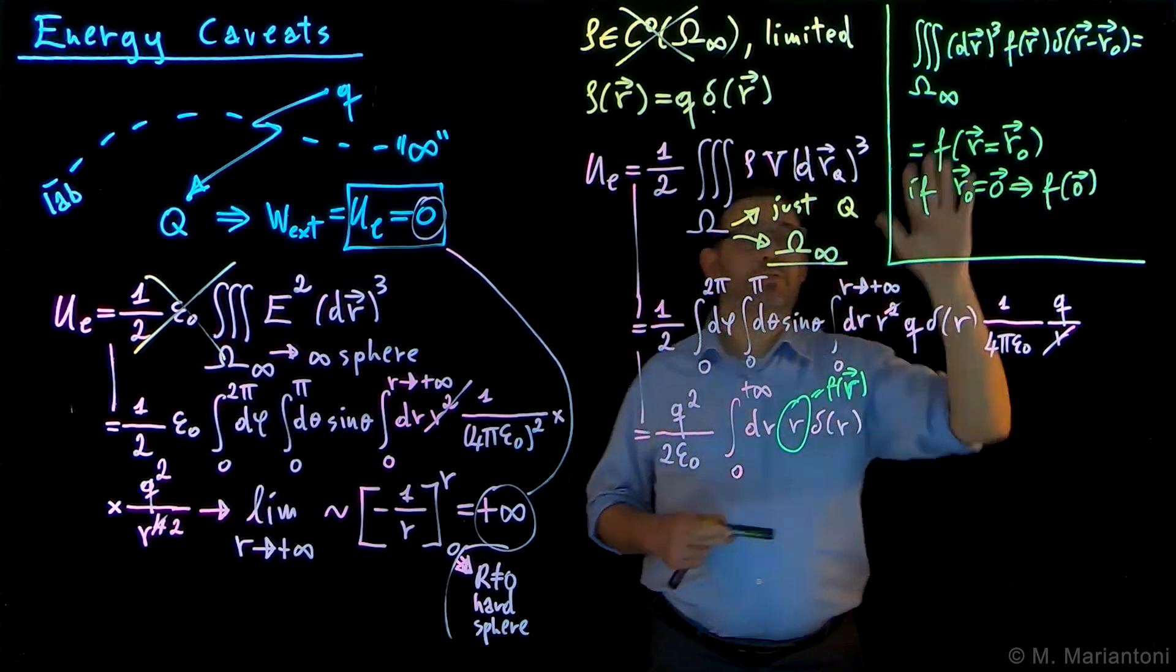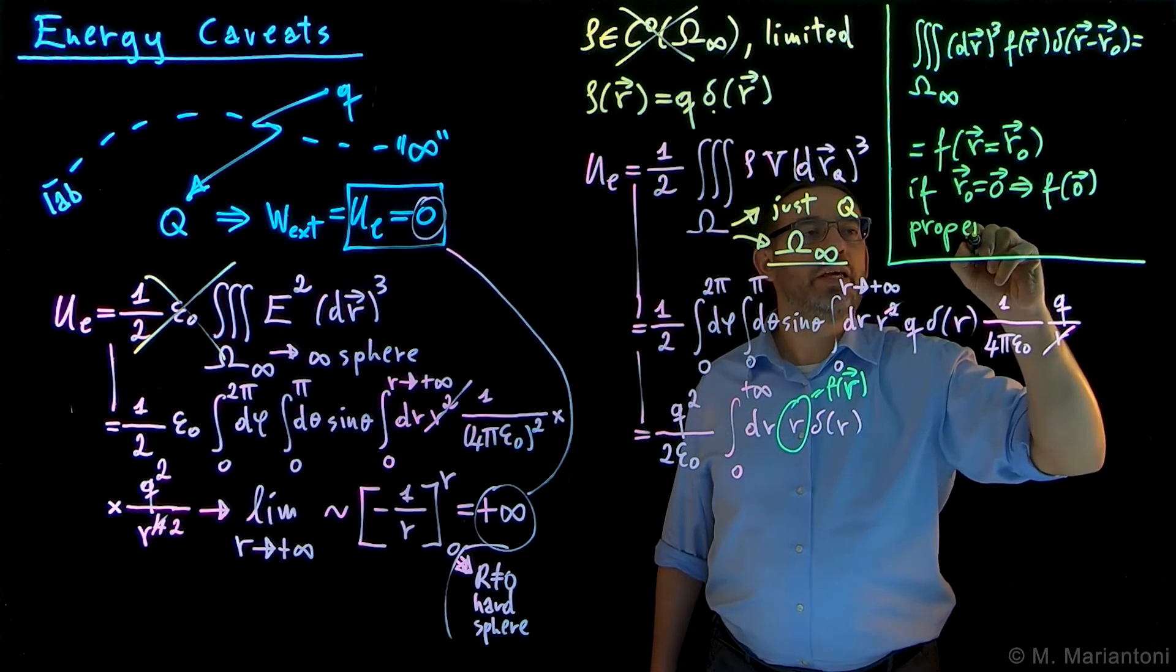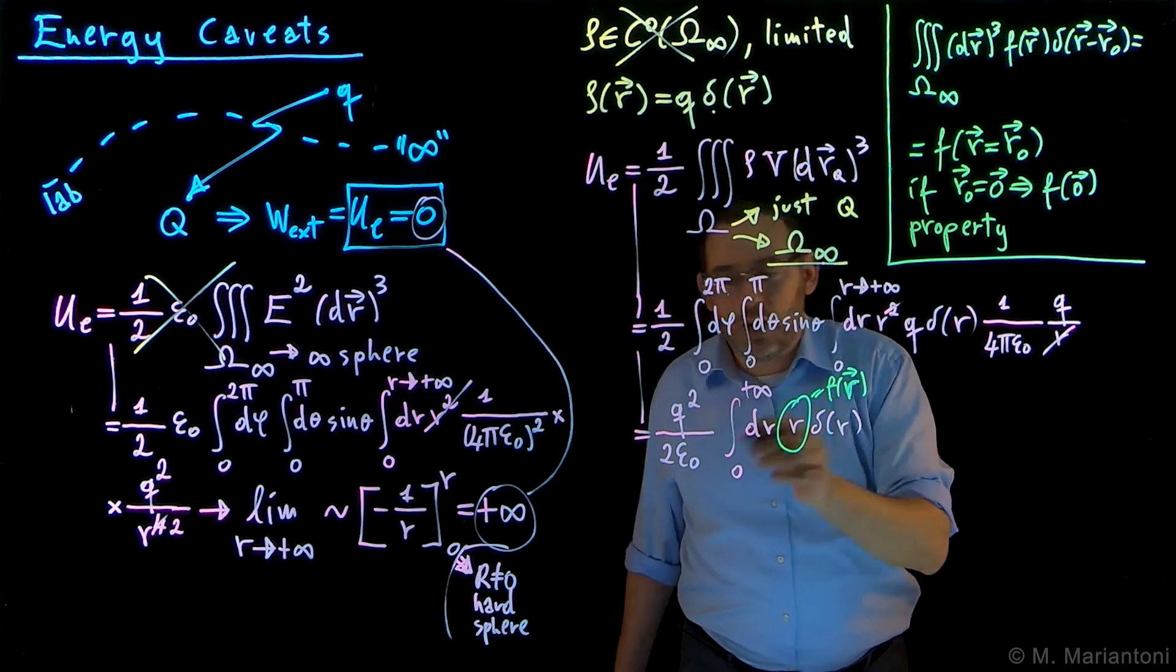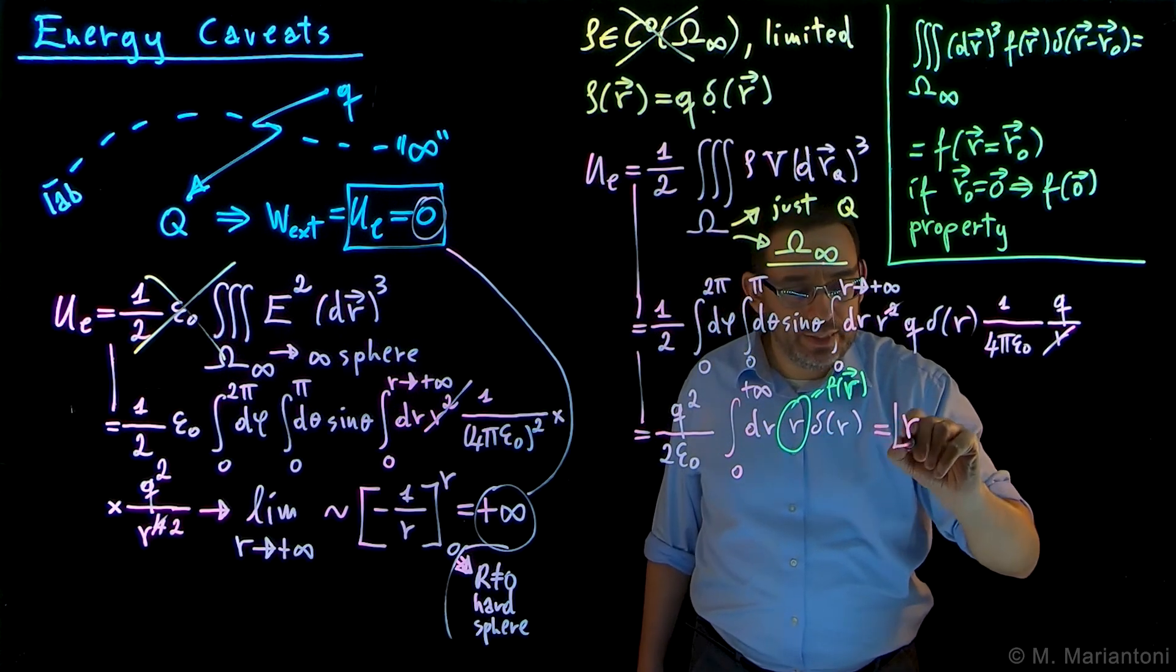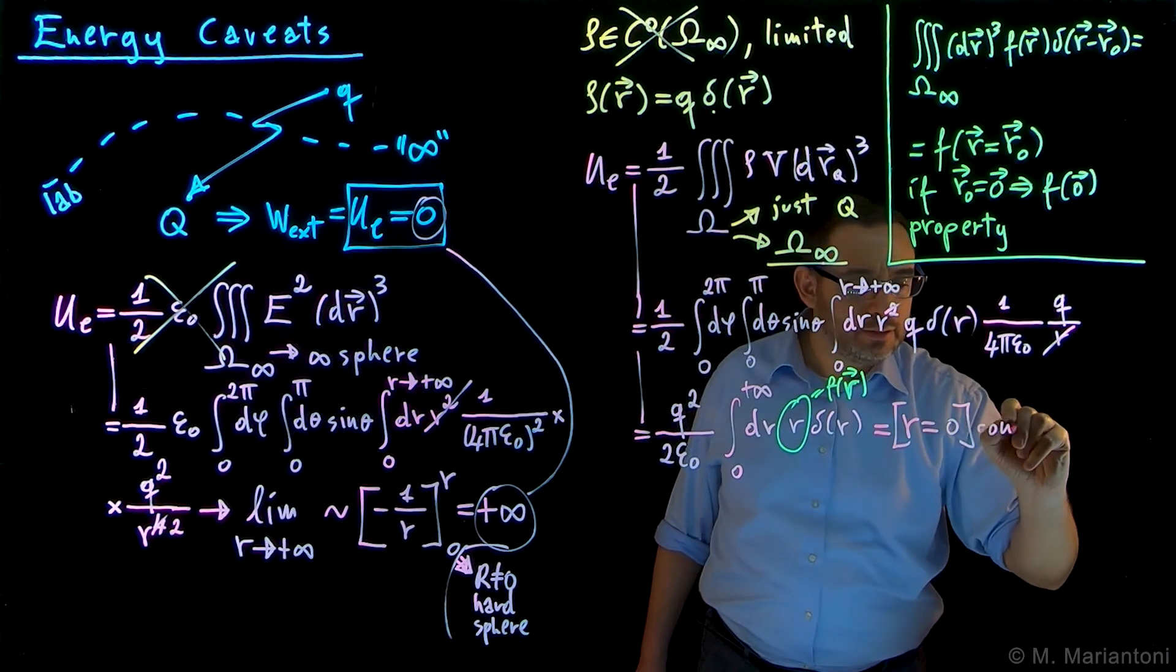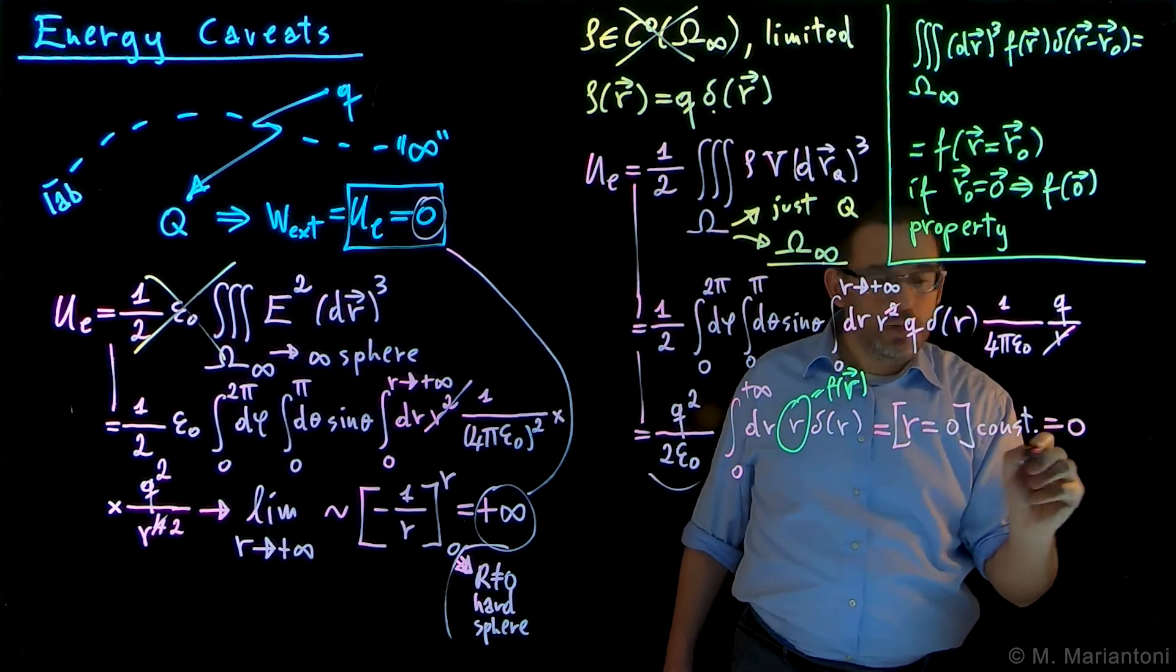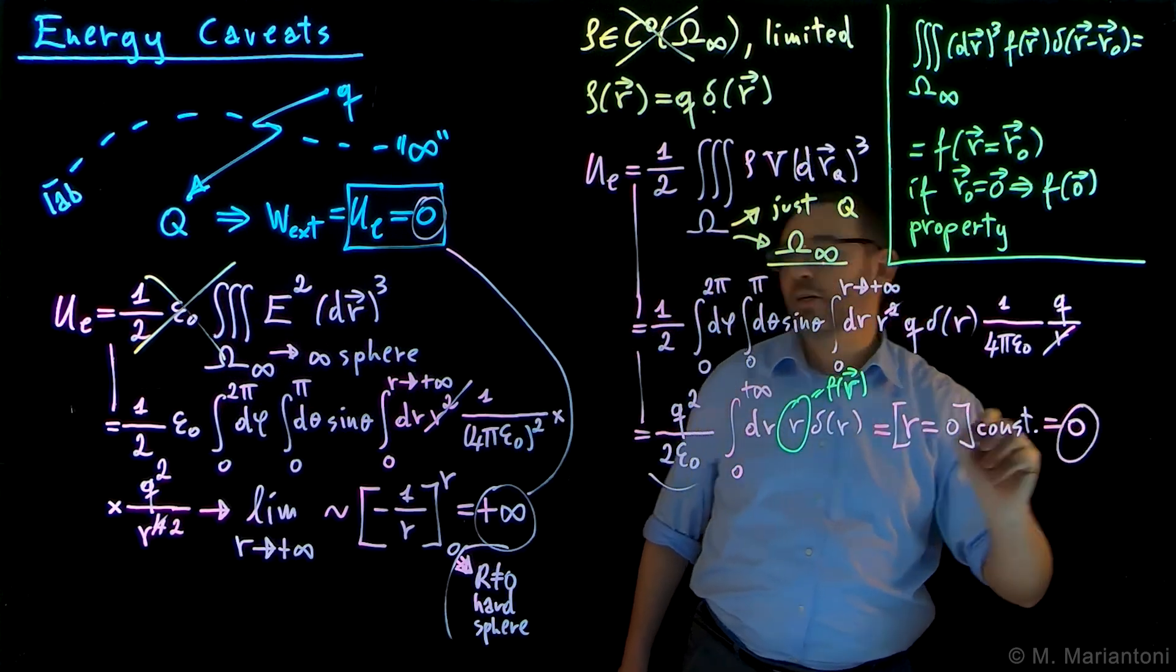That's a fundamental property which I will not prove, but we use it here. When we use it, obviously we get a function times the delta Dirac centered in the origin, besides this constant, which are just constants. This means R evaluated at 0 times a bunch of constants. R at 0 is 0. 0 times constant is 0. So in this case, interestingly enough, as expected, we get an energy which is 0, exactly as the one which we expected from a qualitative discussion of this problem.